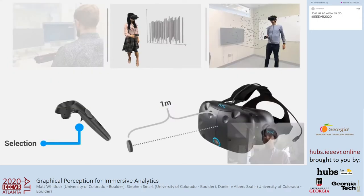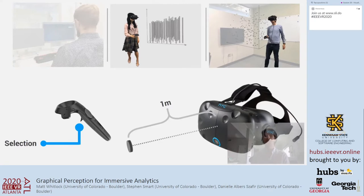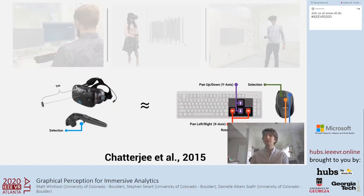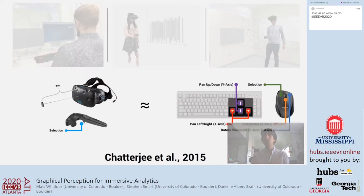In the VR condition we used an HTC Vive, and the AR condition also used the HTC Vive with an attached Zed Mini for pass-through AR. The user interface for selection in AR and VR was a gaze-ray-casted cursor, much like the HoloLens, for specifying an object and the trigger on the back of the remote for selection. The desktop interface uses standard interactions from 3D modeling for panning and rotating the viewpoint and selecting points with the mouse.